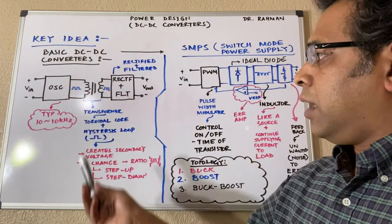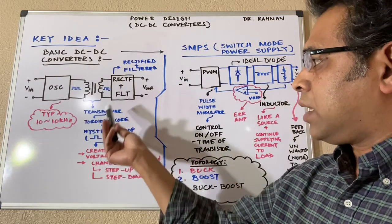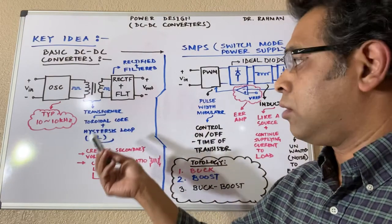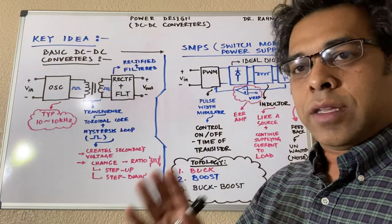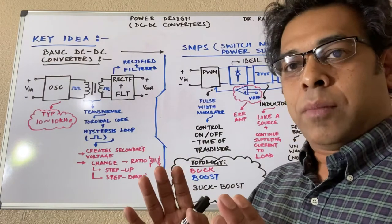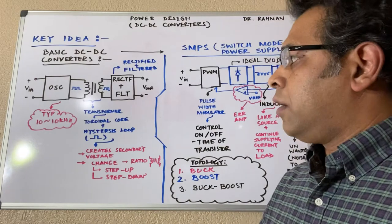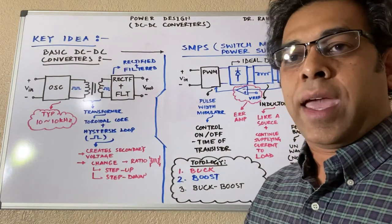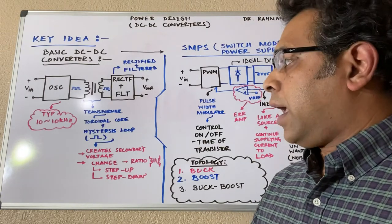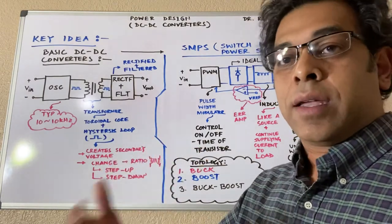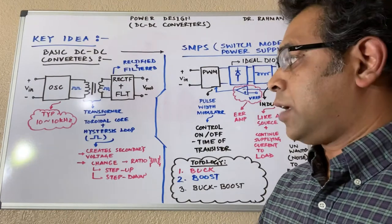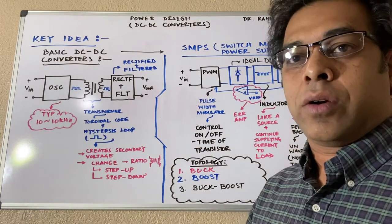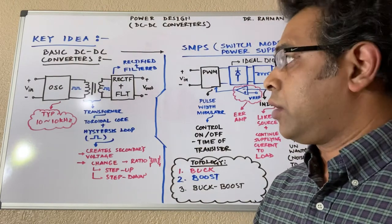I've written some key points you can refer to. The transformer has some structural requirements: first, it should have a toroidal core, which creates a really enhanced magnetic field and generates a secondary voltage. It also has a hysteresis loop, which can control power sequencing and related things.